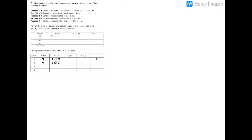Process 2 to 3 says we have constant volume cooling to P3 equals 5 bar, so at state 3 we have 5 bar. Whatever volume we find at state 2 will equal the volume at state 3. Since it's constant volume, there is no work — if you have no change in volume then no work is being done on or by the system — so we zero out the work in process 2 to 3, giving us zero kilojoules.